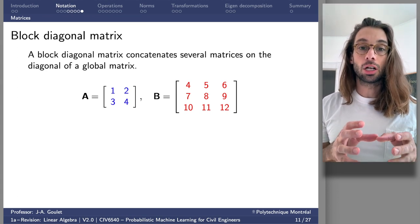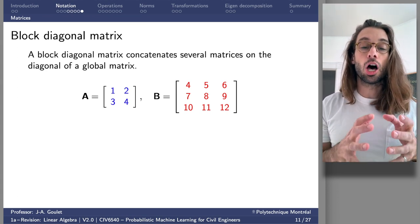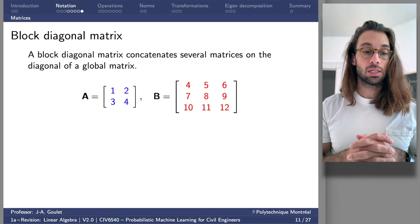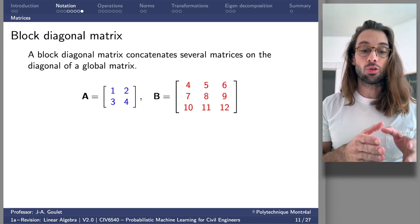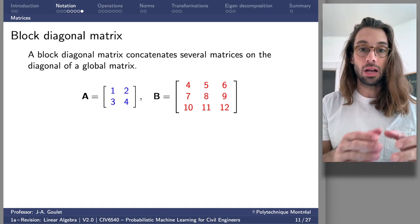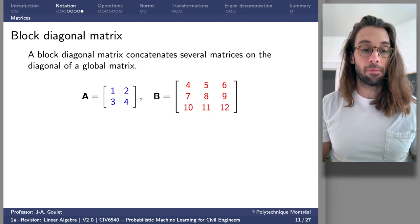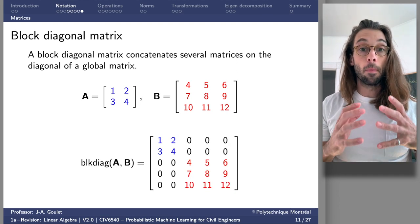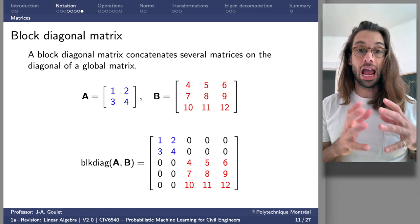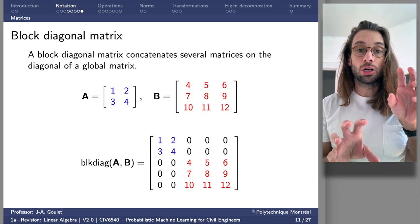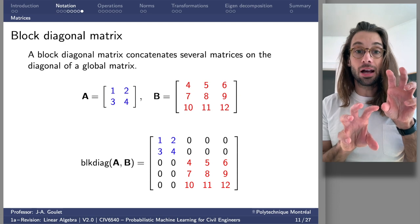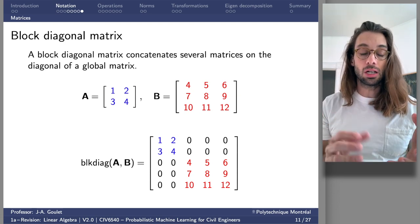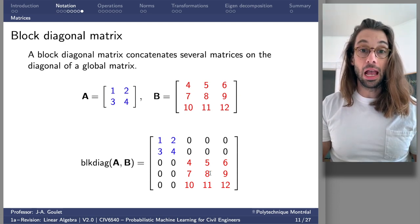Then we're going to see the concept of a block diagonal matrix. Imagine I have a first matrix A and a second matrix B. If I want to build a block diagonal matrix of A and B, I simply concatenate them together on the main diagonal of a larger matrix, placing submatrices A and B as shown. This is what we call a block diagonal matrix.